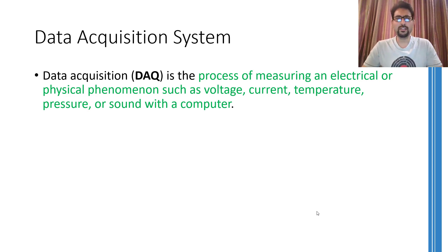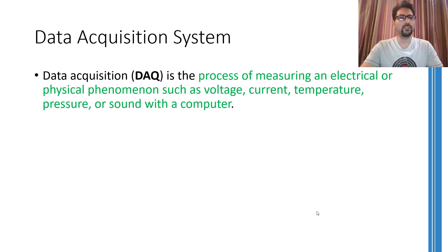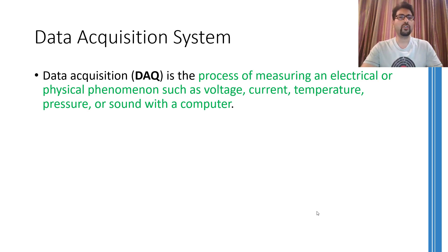Assalamu alaikum. Dear learners, in this video I am going to explain the most important part of any digital signal processing system — that is the data acquisition system. This system is responsible for collecting the data from the real world, mostly in the analog form, converting it into a digital form and routing it towards a processor or a computer where you have implemented the software for performing the digital signal processing.